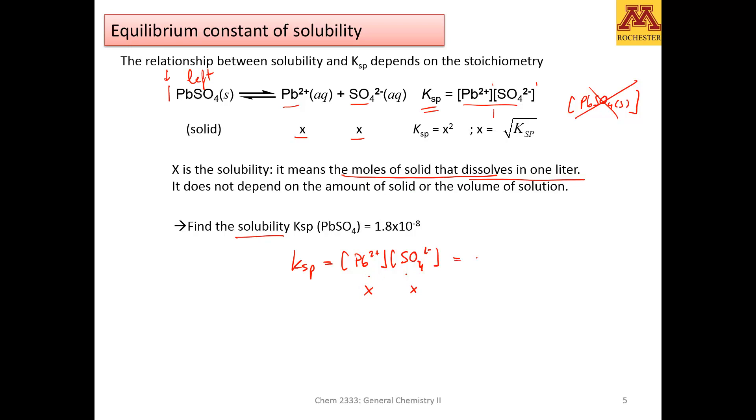That is x times x, this is my x squared, that means x squared is equal to my Ksp, which I'm given the Ksp up here. Therefore, x is the square root of 1.8 times 10 to the negative 8, which will be around 10 to the negative 4 molar.